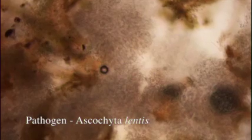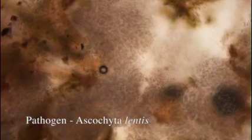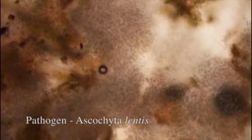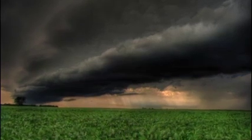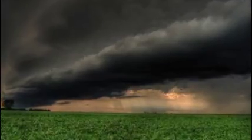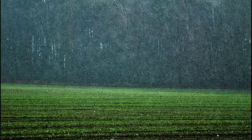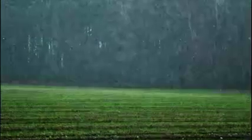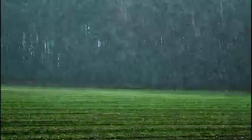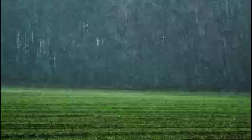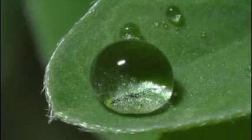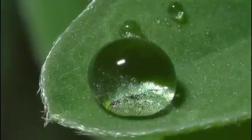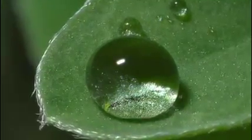Ascochyta blight in lentil is caused by the pathogen Ascochyta lentis. This fungus thrives in cool and humid conditions, particularly following a period of wet weather. These conditions promote the spread of spores, which are dispersed by free water in the form of rain, windblown mist, and splashes on droplets of foliage.